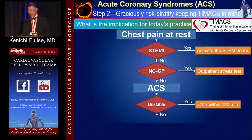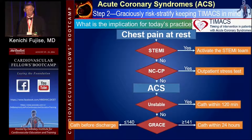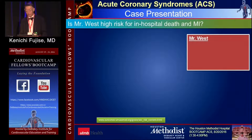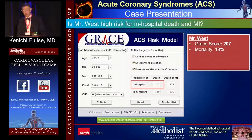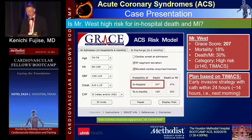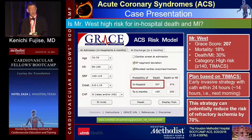If the patient is getting better on medical therapy, then you must determine the GRACE score to decide whether cardiac catheterization needs to be performed within 24 hours or before discharge. Applying this to Mr. West, his GRACE score turns out to be 207, which is very high, associated with a mortality rate of 18%. This is a high-risk patient. Based on the TIMACS clinical study, the strategy is clear: early invasive strategy with cardiac catheterization within 24 hours, which can potentially reduce the risk of refractory ischemia by 70%.